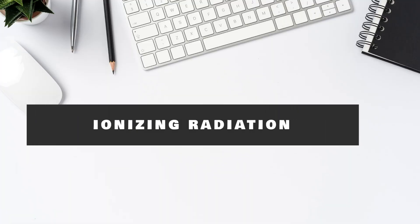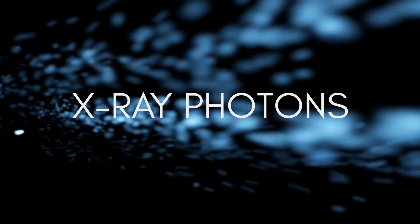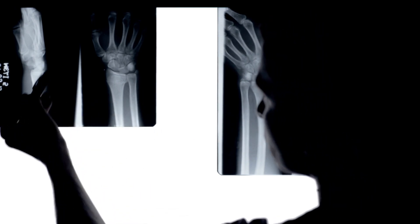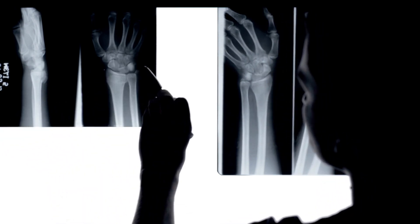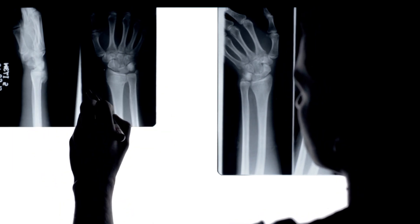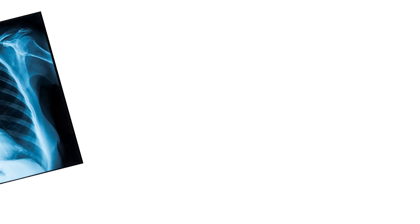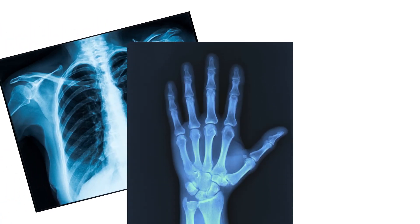First, let's talk about modalities where ionizing radiation is used, and the source of radiation is a cathode ray tube. X-ray radiography: the source of radiation is ionizing radiation, where x-ray photons are produced by a cathode ray tube and shot into a patient. Typically, single static images are captured and separate views may be captured — static high-resolution images in grayscale. This receives the DICOM modality tag of DX or CR. An example could be a chest x-ray or an x-ray of the hand where you take multiple views.